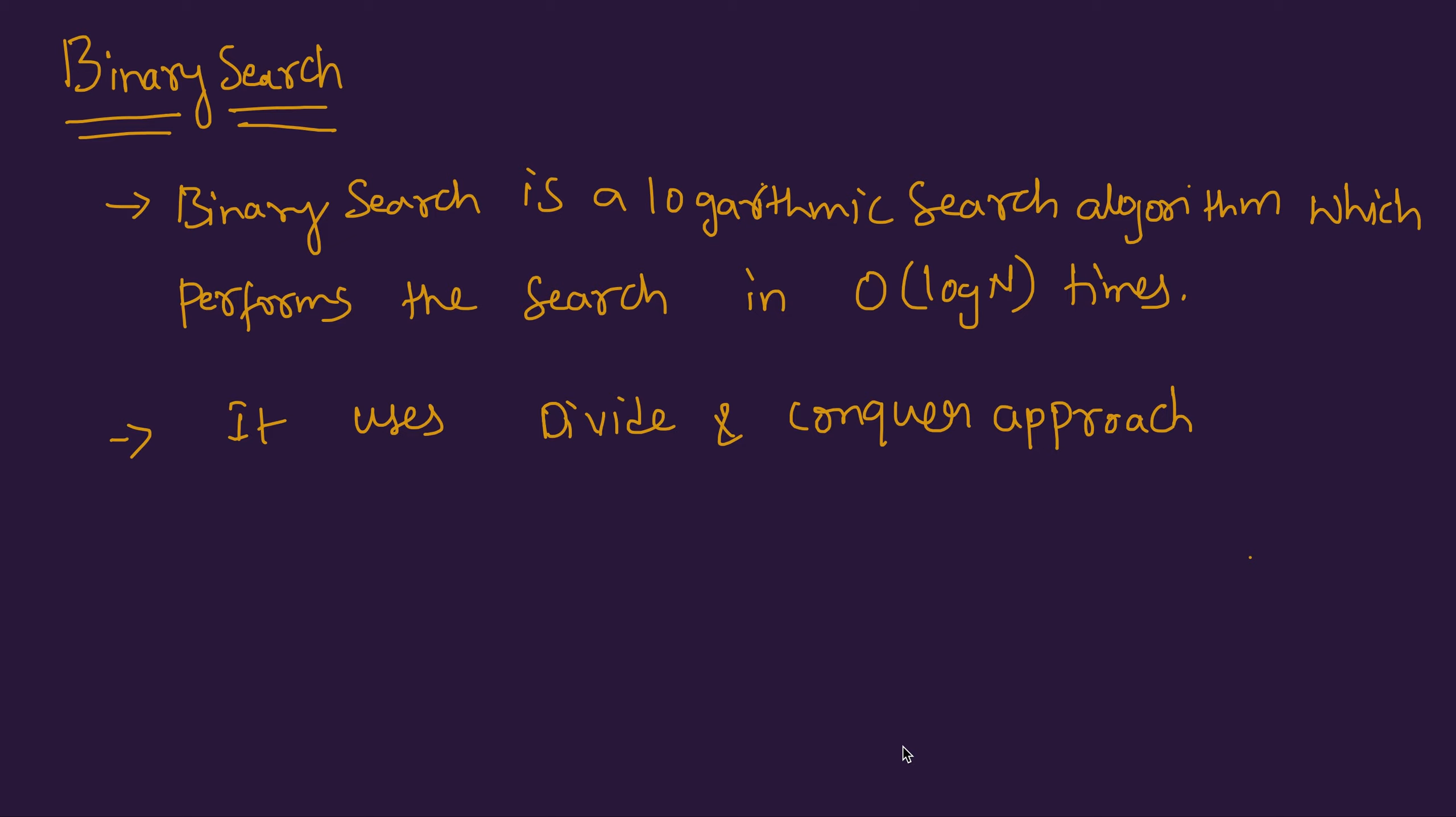This binary search uses divide and conquer approach where it divides the given collection of elements into half each time for every iteration until it finds the number or if we don't find the number. One more thing: binary search only works on a sorted collection.